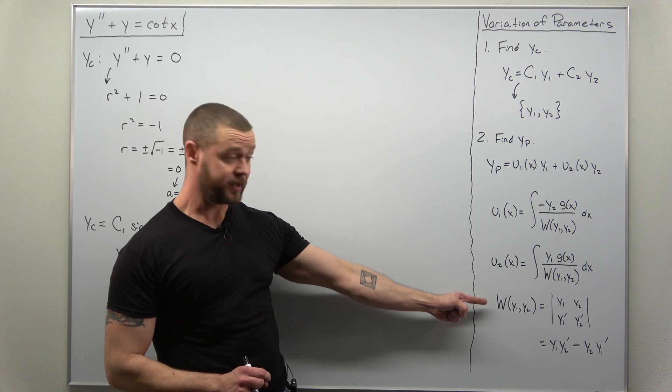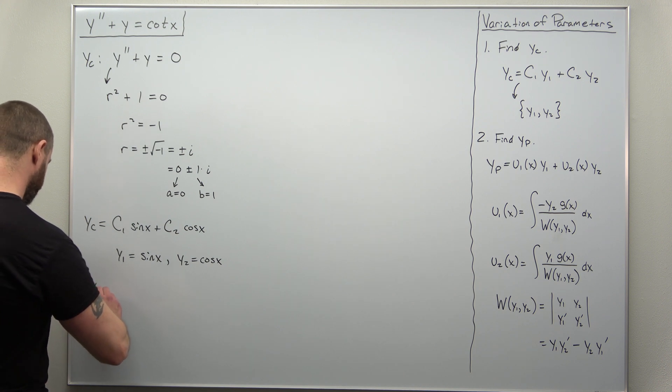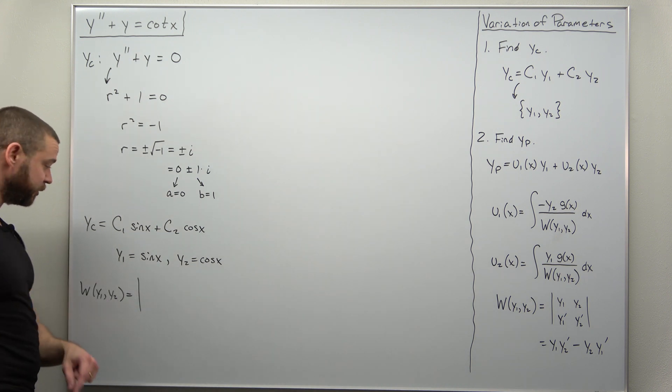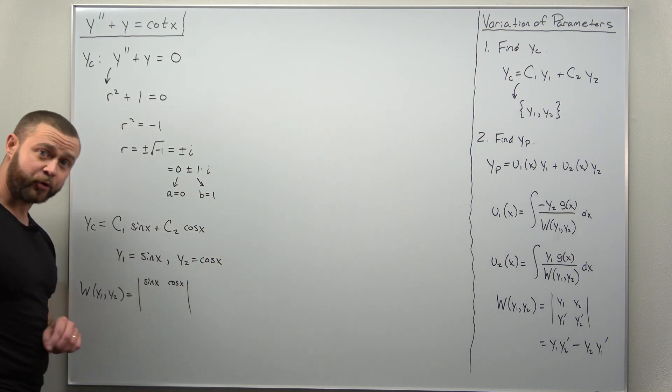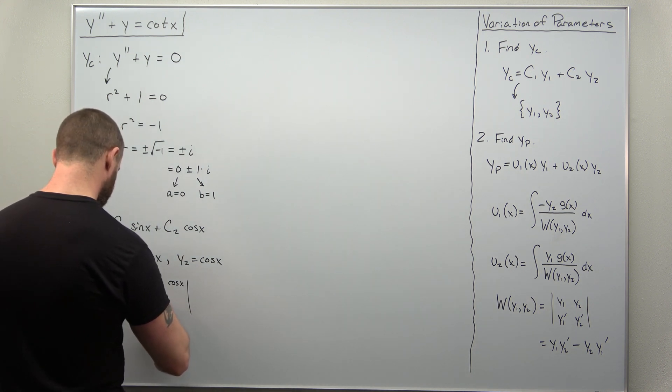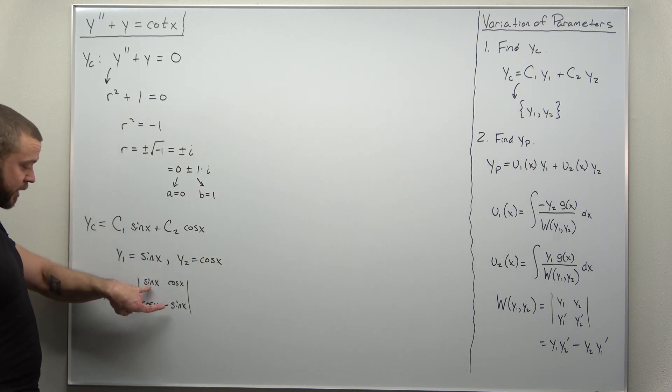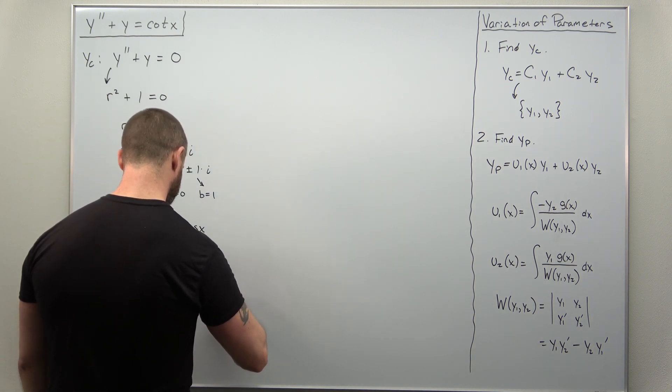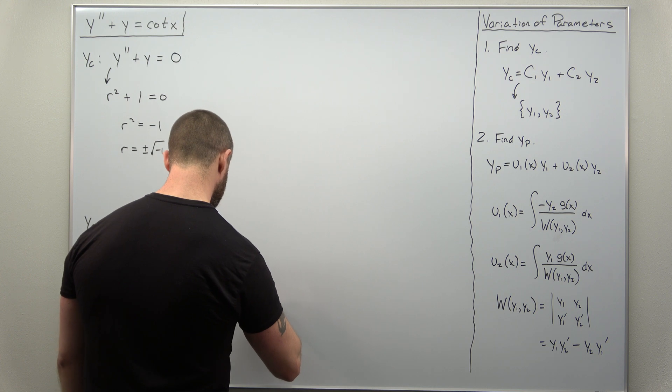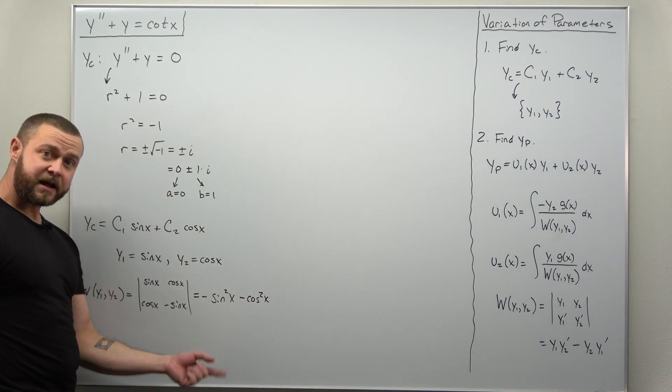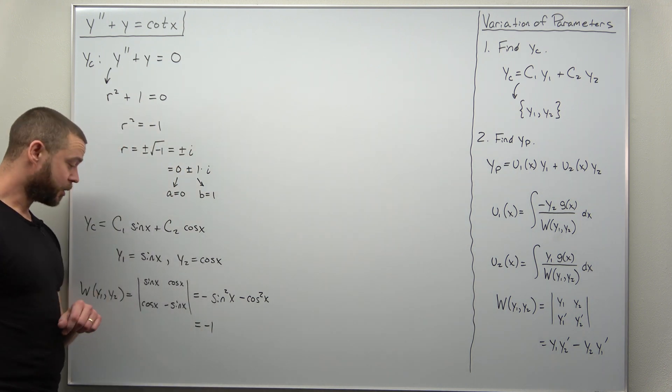As soon as you have y1 and y2, I always like to immediately calculate the Wronskian, since we're going to need that in the denominators of our integral formulas. And this one should be pretty straightforward. Set this up as a simple two by two determinant. We'll put sine and cosine in the top row. Their derivatives go in the bottom row: cosine of x and negative sine of x. And if we calculate this two by two determinant, we'll get negative sine squared minus cosine squared. If you want, you can factor out a negative, or maybe you've seen it already. By using your basic Pythagorean identity, the Wronskian here works out to negative one.